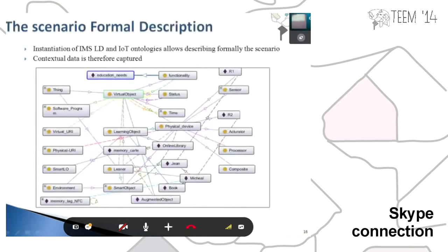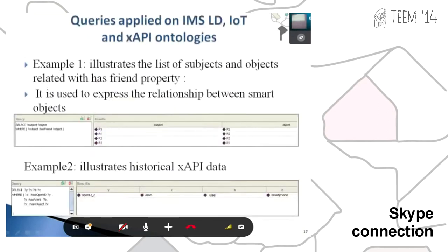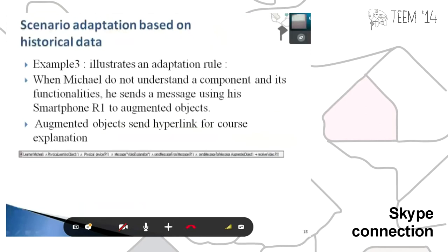For the scenario description, here we have a sample of the IMS LD, the xAPI, the Internet of Things ontology, and we have contextual data as a factor. You can see the applied IMS LD and the xAPI ontology. For xAPI, the list of subjects and objects uses the health crime property and we need a claim for retrieving these kinds of statements. As an example of adaptation rules: when Michael does not understand a component, the system sends a message that links his phone to a remote object, and the remote object provides a hyperlink for a self-explanatory resource.